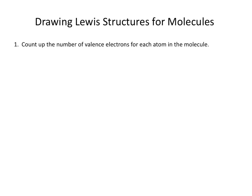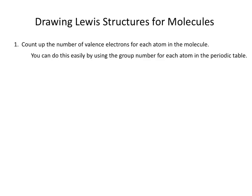The first thing you need to do before drawing a Lewis structure is to count up the number of valence electrons for each atom in the molecule. You can do this easily by using the group number for each atom on your periodic table. You then need to adjust the number of valence electrons if you are drawing the structure of an ion. If you have an ion with an overall charge of negative 2, that means the molecule as a whole has two extra electrons, so you would add 2 to your total. Likewise, if you had a net positive charge of plus 1, you would subtract one electron from your total number of valence electrons.